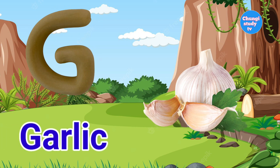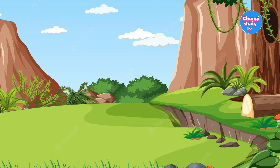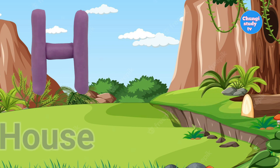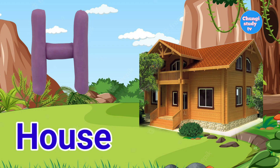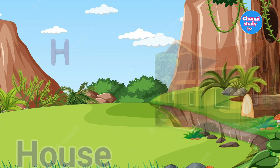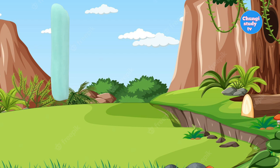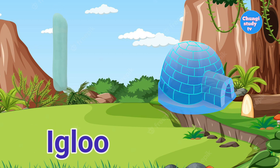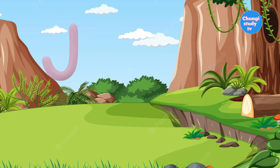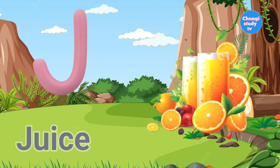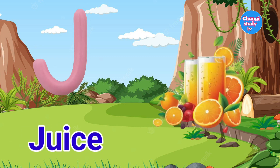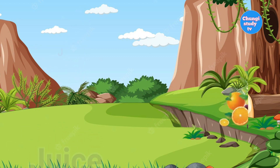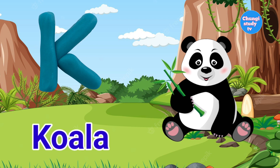G for Garlic. H for House. I for Igloo. J for Juice.